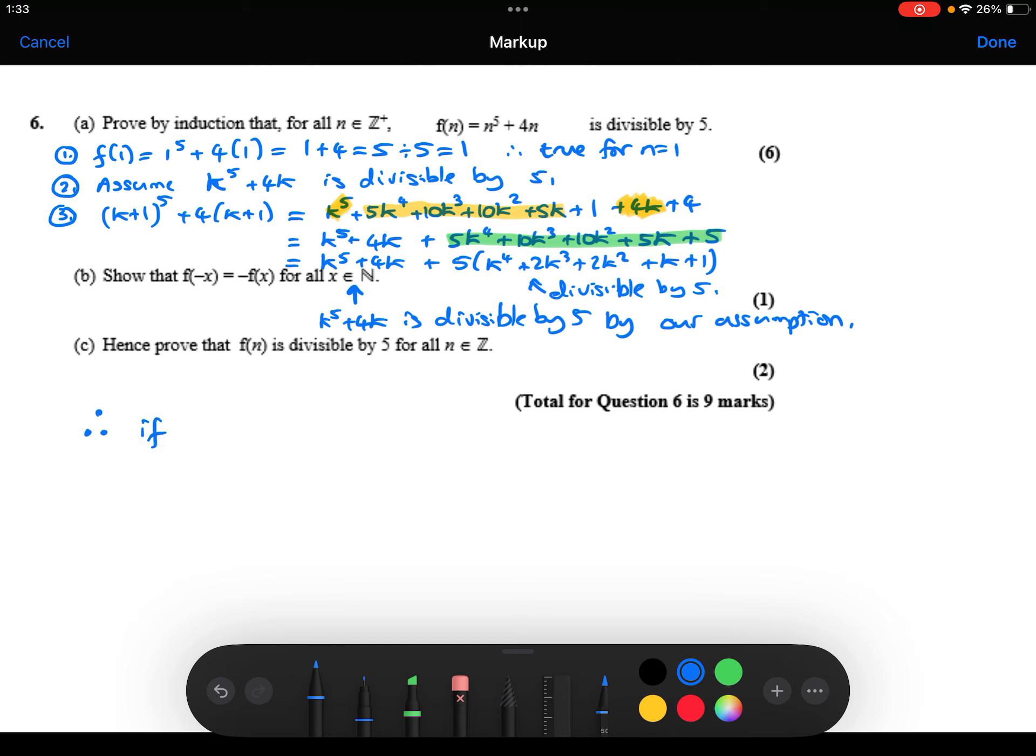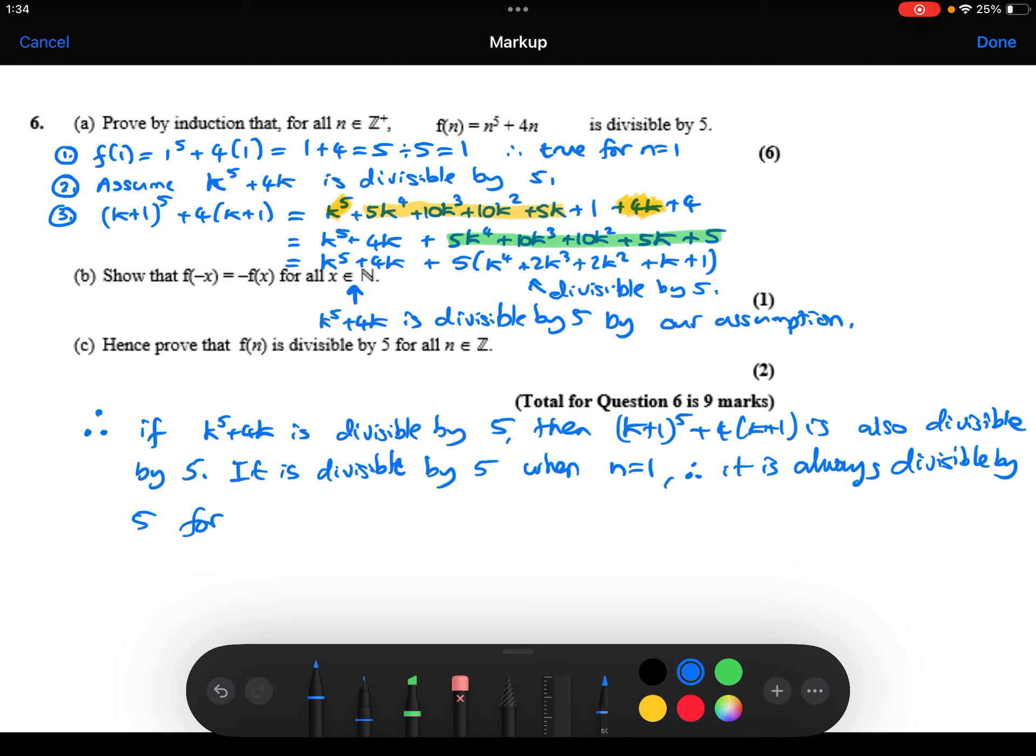Therefore, if k to the power of 5 plus 4k is divisible by 5, then also k plus 1 to the power of 5 plus 4k plus 1 is also divisible by 5. We have shown in step 1 that it is divisible by 5 when n is 1. Therefore, it is always divisible by 5. So, that's part A of this question done.